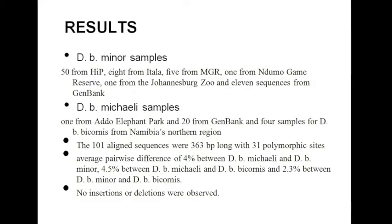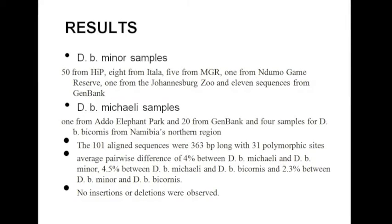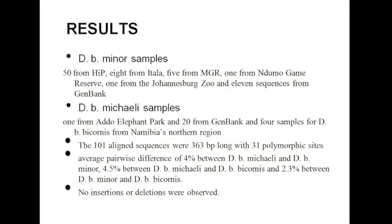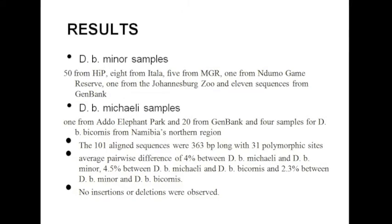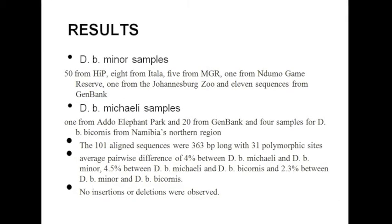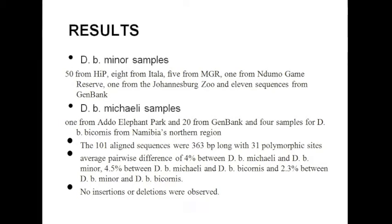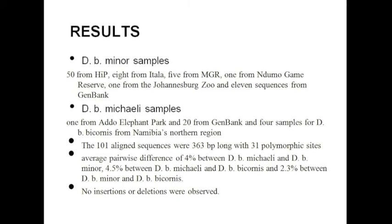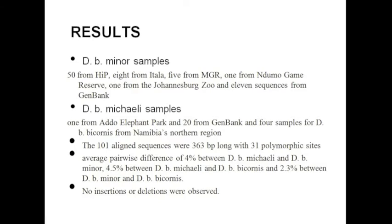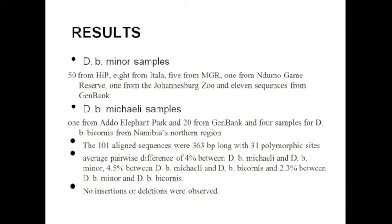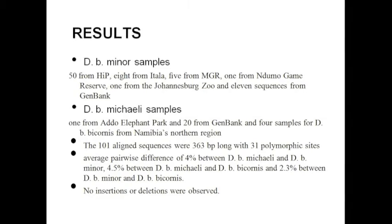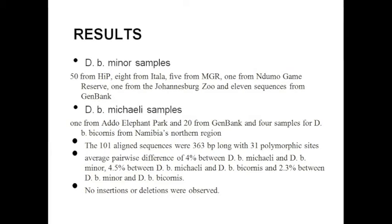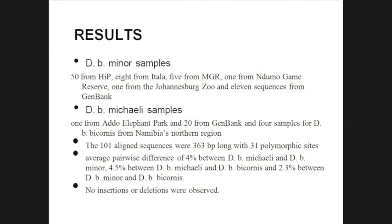The mtDNA control region sequence was determined for 70 individual black rhinos. D. b. minor samples included 50 from HIP, 8 from Itala, 5 from MGR, and 1 from Dunо Game Reserve. The 101 aligned sequences were 363 bp long with 31 polymorphic sites. There was an average divergence of 4% between D. b. michaeli and D. b. minor, 4.5% between D. b. michaeli and D. b. bicornis, and 2.3% between D. b. minor and D. b. bicornis.